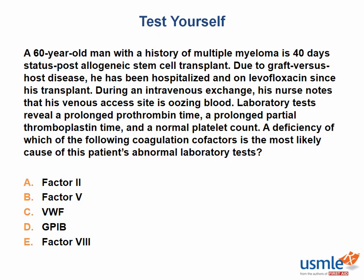So let's try a USMLE-style question. A 60-year-old man with a history of multiple myeloma is 40 days status post allogeneic stem cell transplant. Due to graft-versus-host disease, he has been hospitalized on levofloxacin since transplant. During an intravenous exchange, his nurse notes that his venous access site is oozing blood. Laboratory tests reveal a prolonged prothrombin time, partial thromboplastin time, and a normal platelet count. A deficiency in which of the following would most likely cause this patient's abnormal laboratory tests: factor 2, factor 5, von Willebrand factor, glycoprotein 1B, or factor 8?